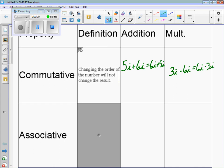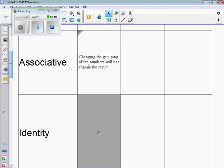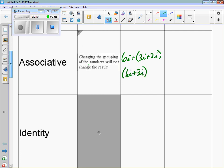With associative, we have changing the grouping of numbers will not change the results. So if you have 6i plus 3i plus 2i, this is the same thing as if I shift the parentheses and keep the order the same. I can add 6i plus 3i first and this is the exact same thing. These are equal.